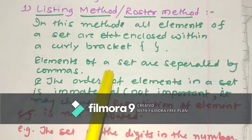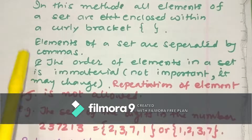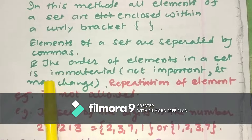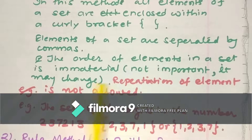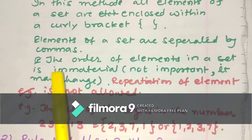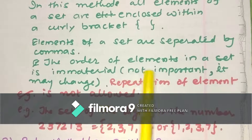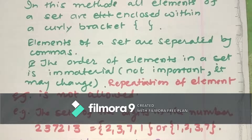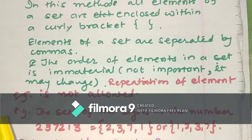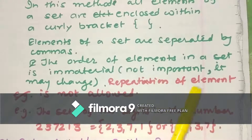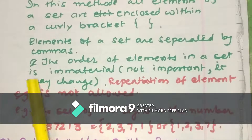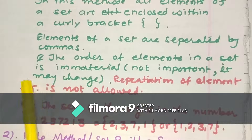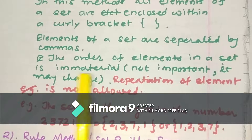If a set contains two or more elements, they are separated by commas, and if it has infinitely many elements we use 'and so on'. The order of elements in a set is immaterial — that is not important. For example, the set of natural numbers from 1 to 10 can be written as N = {1, 2, 3, 4, 5, 6, 7, 8, 9, 10}. We can also write it as {10, 5, 4, 3, 2, ...} — any element can be placed at any position. That is, the order of elements is not important.